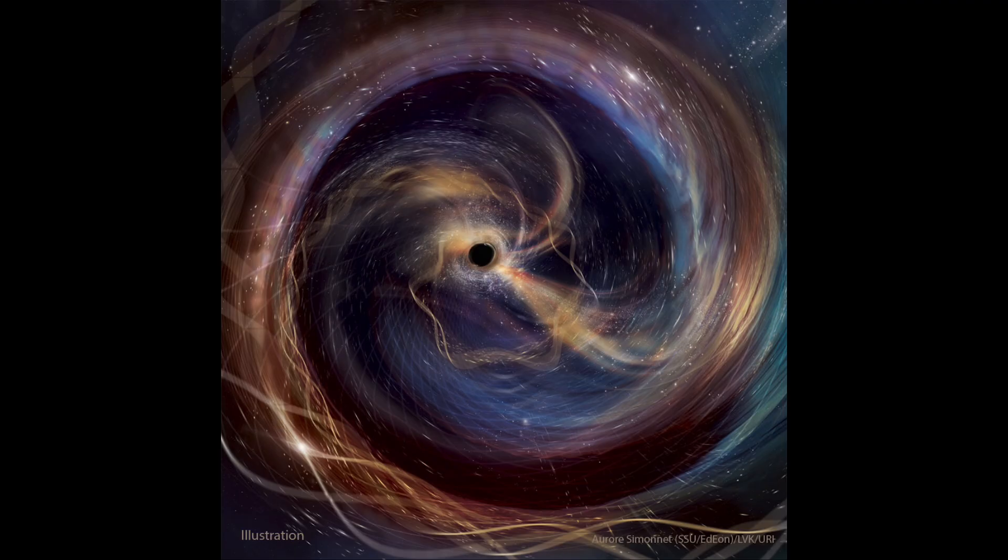Gravitational waves were predicted over 100 years ago in Einstein's general theory of relativity. Essentially, what it says is that any moving object with mass will give off gravitational waves. That would be just about anything—you or I, or a planet or a star. But because the gravitational force is so weak, these waves are incredibly hard to detect.